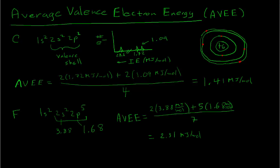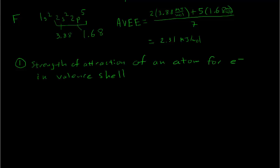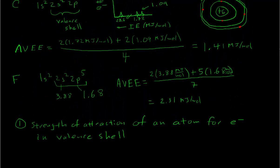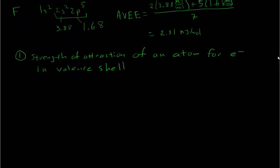So what do these two numbers tell us? They tell us two things. First, they tell us about the strength of the attraction of the atom to its valence electrons — that was the quantity we wanted. Looking at fluorine and carbon, we can see that fluorine has a much stronger attraction for its valence electrons compared to carbon — almost twice as strong. Fluorine atoms really hang on tightly to any electron that might be in its valence shell.